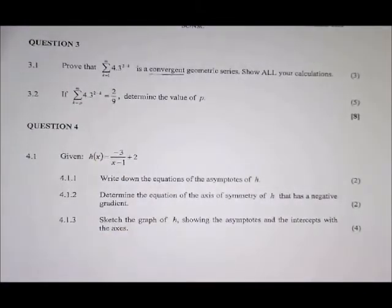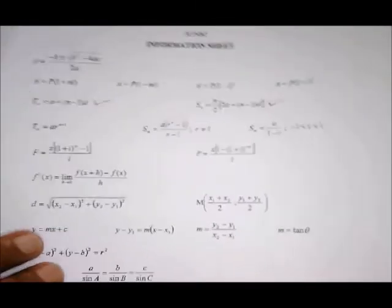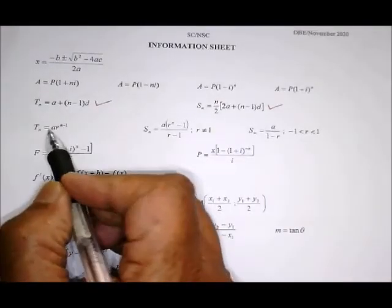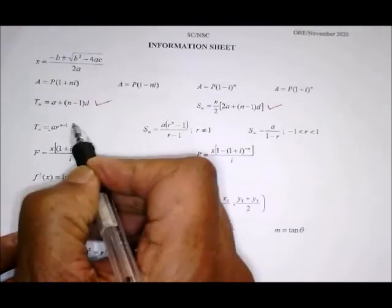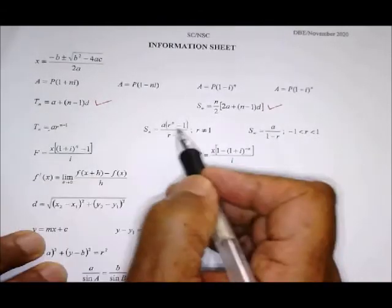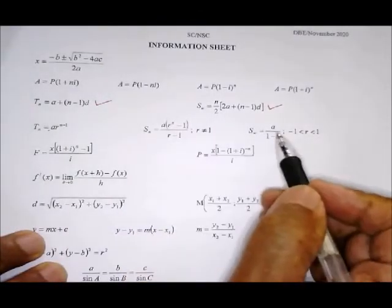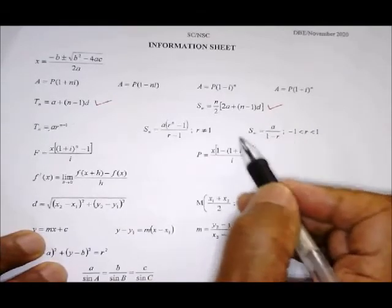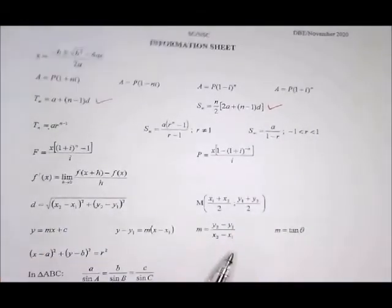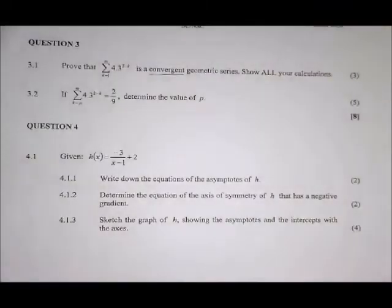Now this is geometric, so immediately if you go to your formula sheet, you should know it is those three terms there that deal with geometric. This is the general term, this is the sum, and there's another one for sum. But I'm going to choose this one because, remember, I'm dealing with sum to infinity. So that is what I'm going to do now.